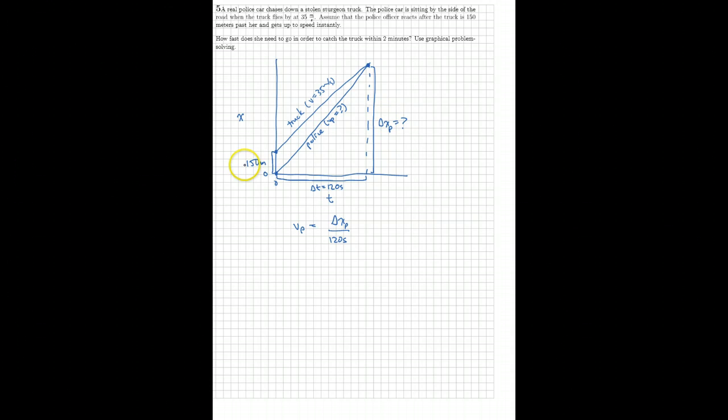Now what I'm going to do is try to express this delta X in terms of other things. I know the 150 meters is part of that delta X, but not the whole thing. I also have to add in this amount to get the whole thing. And that is the delta X for the truck, because it goes from the initial position of the truck to the final position. So I can revise this a little bit to get closer. But I don't know what the delta X of the truck is.